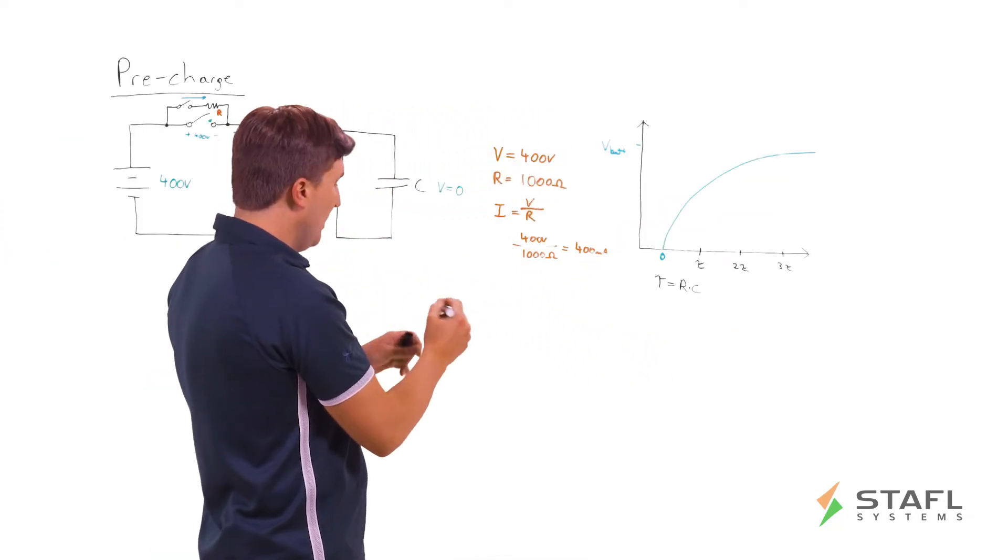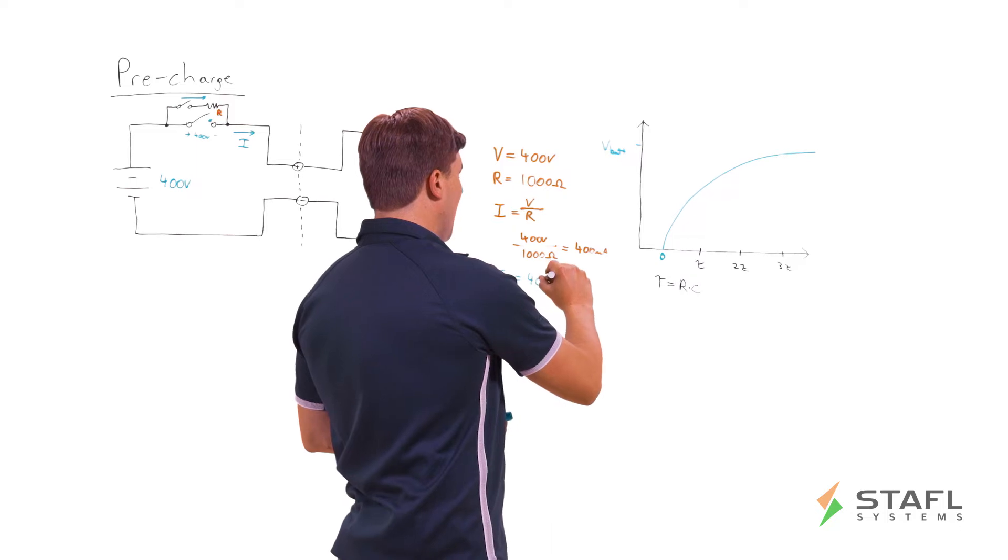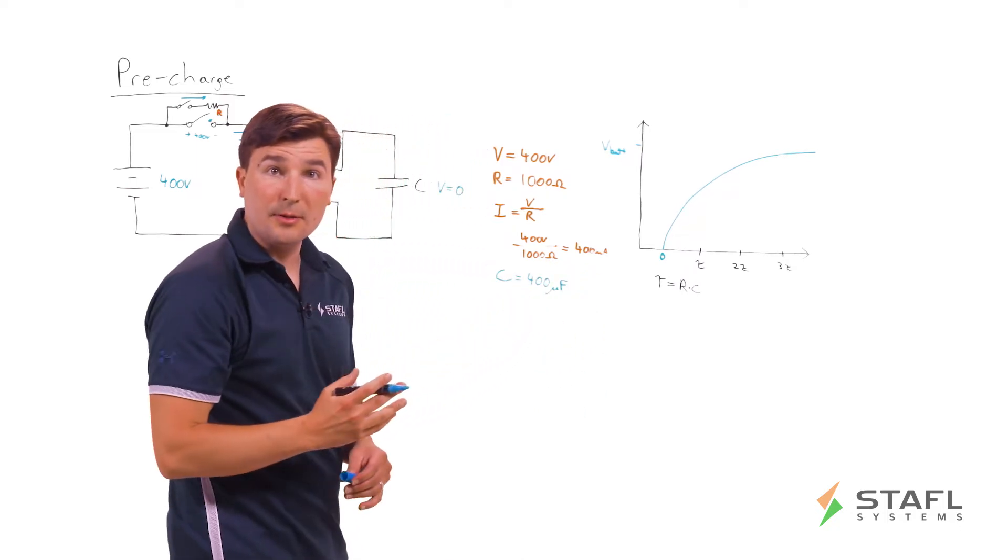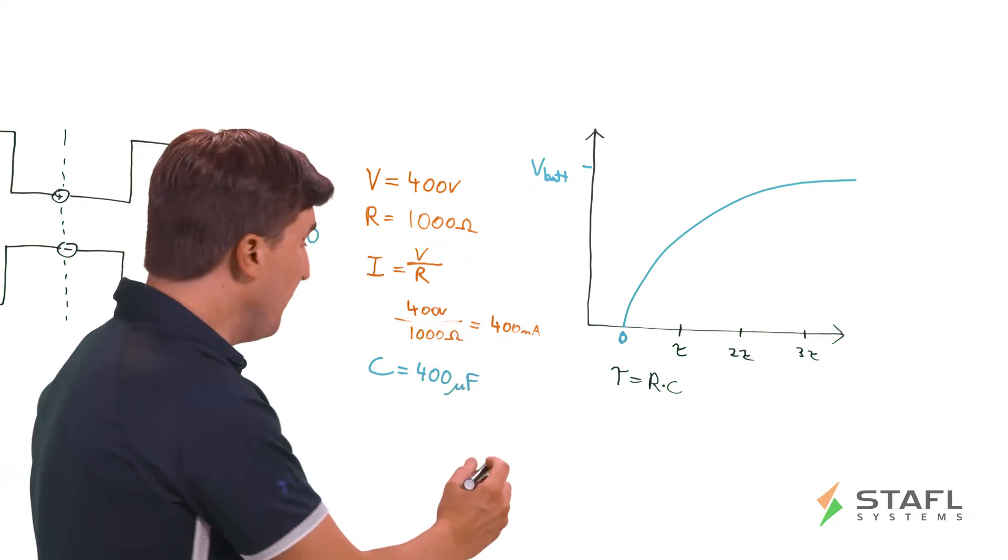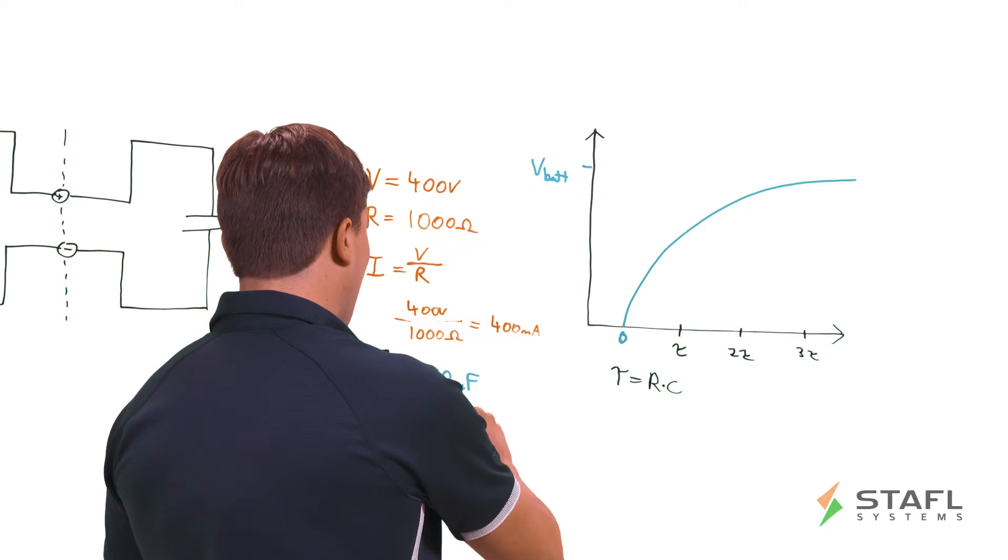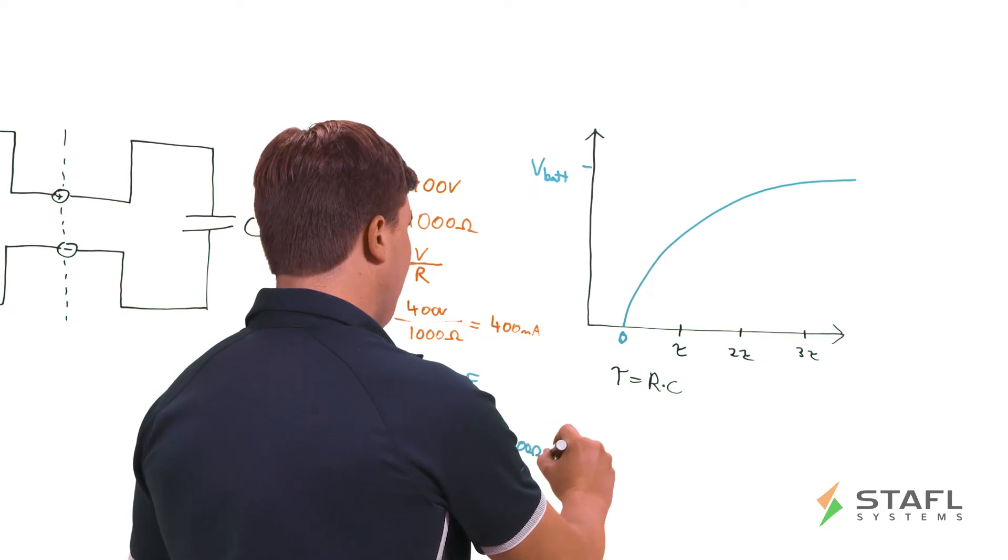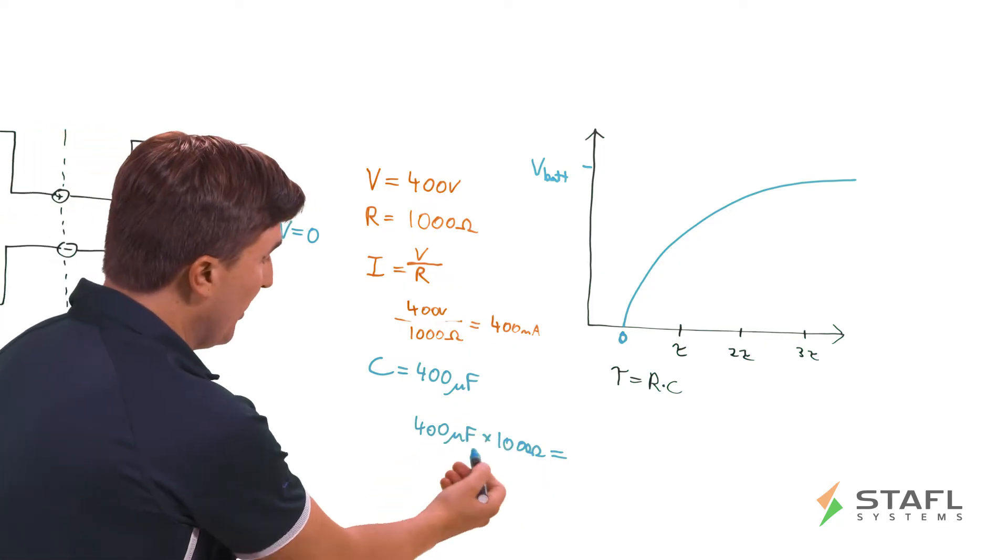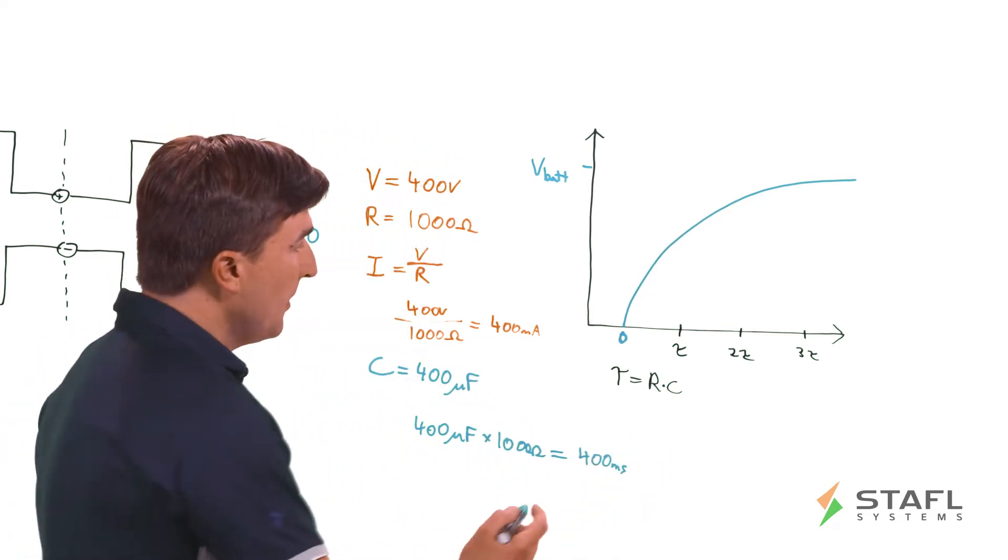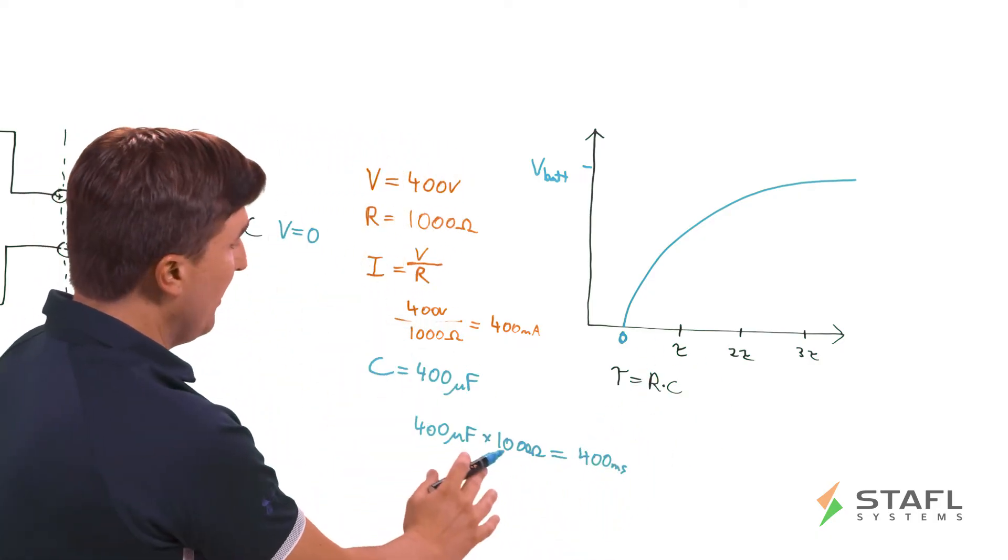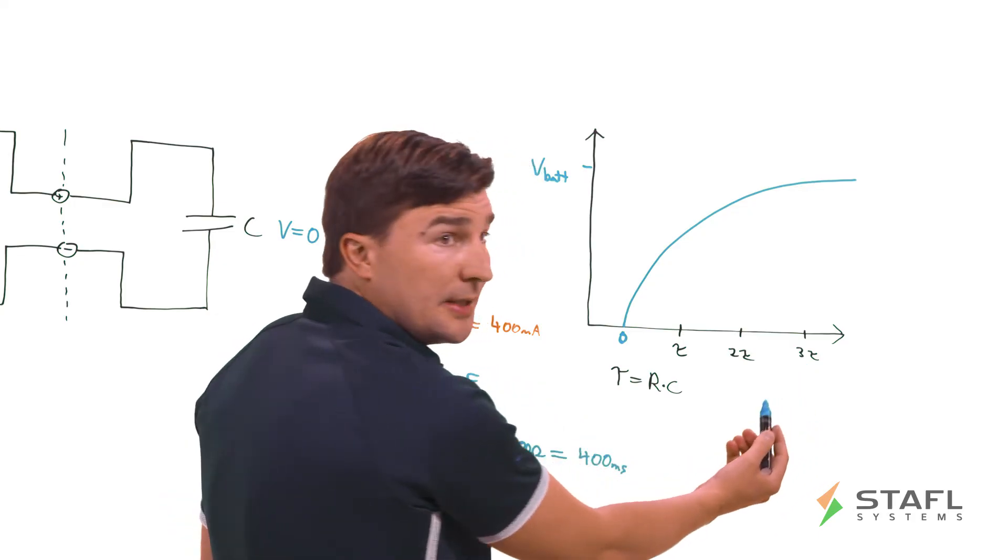So using our example again, say that we have a capacitance of 400 microfarads. This is a fairly typical capacitance you might see in an electric vehicle inverter. So if we have 1000 ohm resistor and 400 microfarads of capacitance, we'll multiply 400 microfarads times 1000 ohms. What is the time for that? Well 1000 times 400 micro, that is 400 milliseconds or 4 tenths of a second. So in this situation, one time constant of this pre-charge circuit would be 400 milliseconds, two time constants would be 800 milliseconds, and three time constants would be 1200 milliseconds or 1.2 seconds.